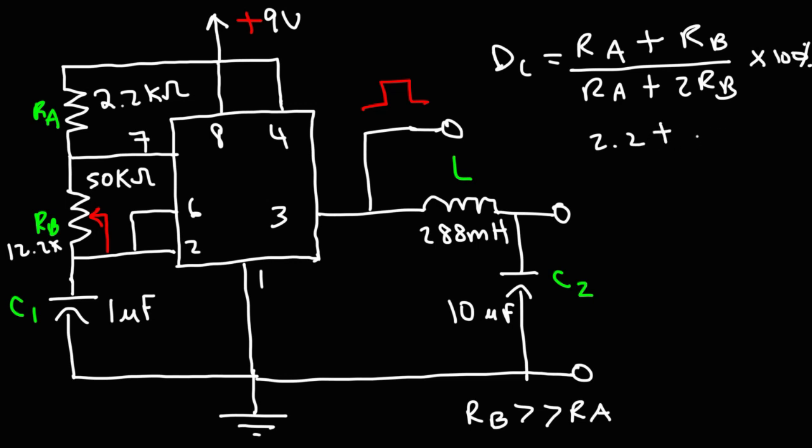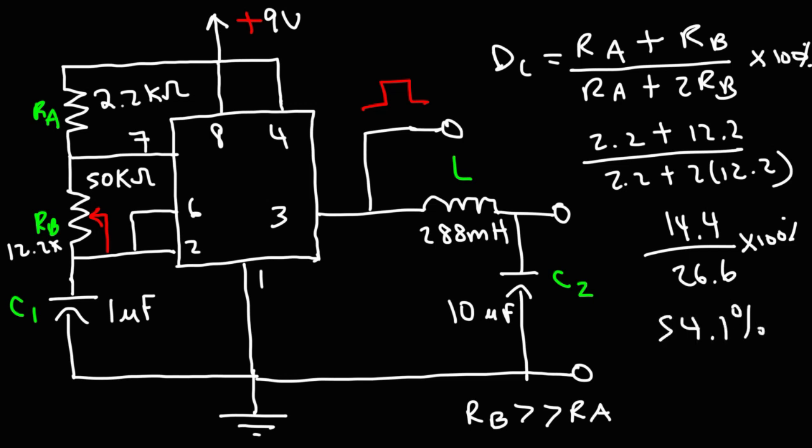Our RB is 12.2. So 2.2 plus 12.2, that's 14.4. 2 times 12.2, that's 24.4 plus 2.2. So that's 26.6. And so this is 54.1%. It's not exactly 50%, but to make this experiment work, this is good enough. So that's why I have RB as a potentiometer. To not only adjust the duty cycle of the square wave that's generated at output 3, or pin 3, but also to adjust the frequency as well.